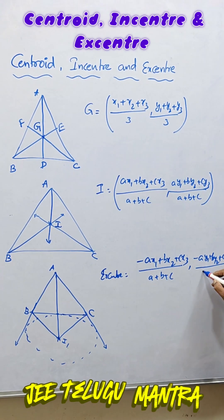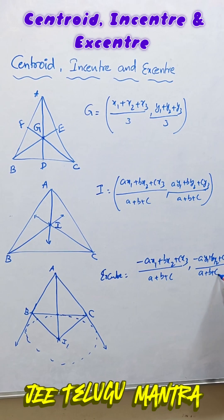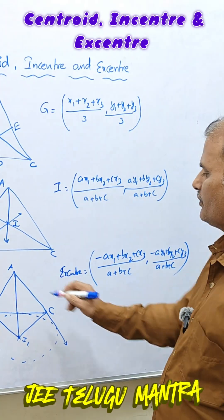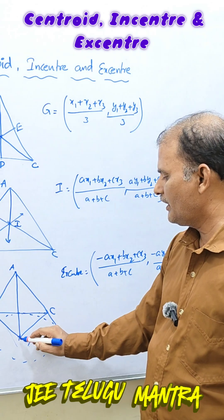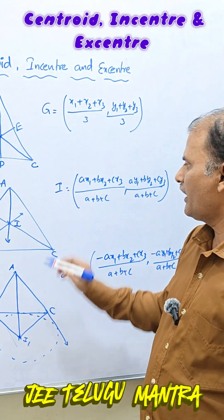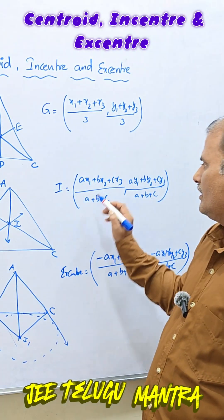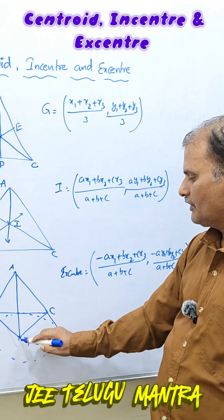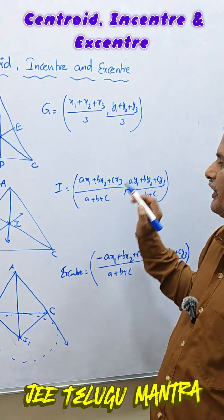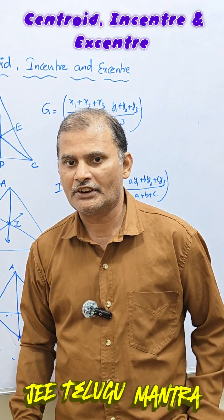Because we discuss about the ex-centre that means one internal and two externals means here I1 opposite to angle A that should be negative. If you discuss opposite to angle B, here B is negative. If you discuss opposite to angle C, C is negative. This is about centroid, in-centre and ex-centre.